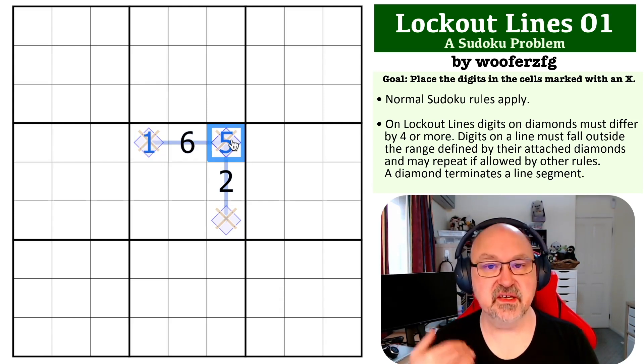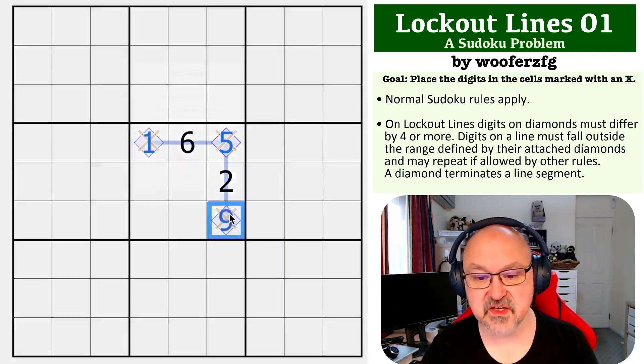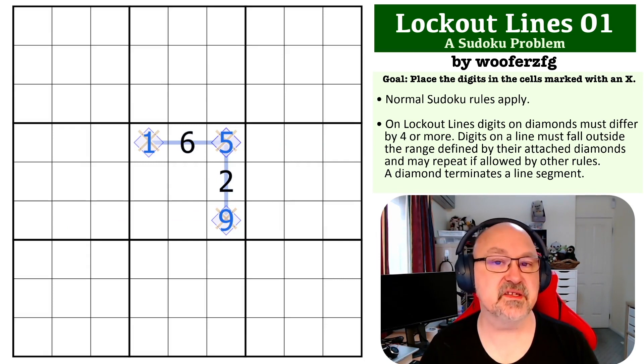The only digits that can be four apart from five are one and nine. And so these are the one and nine, but I've already got the one. So this becomes the nine, and that completes the problem.